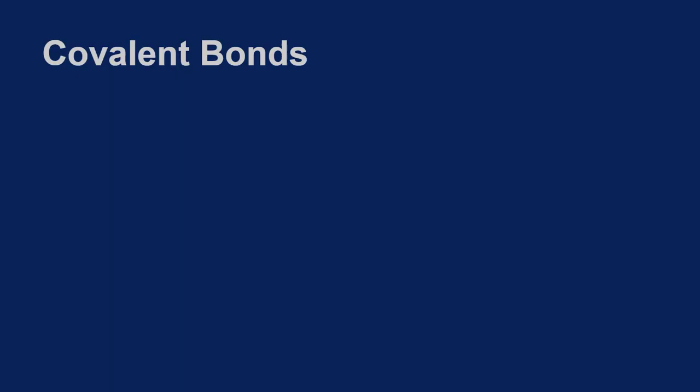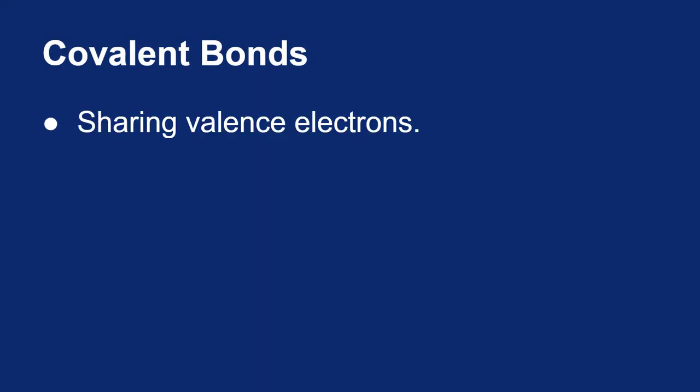In the last videos, we looked at ionic bonding. Now I want to talk about covalent bonding. Recall that covalent literally means sharing valence electrons, unlike ionic bonding where electrons are transferred, leaving the metal and going to the nonmetal. Here you'll have two nonmetal atoms sharing electrons back and forth.